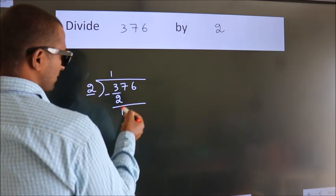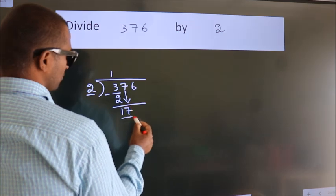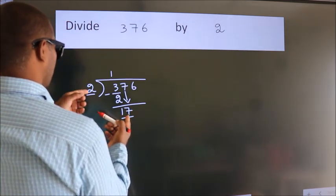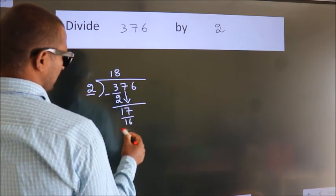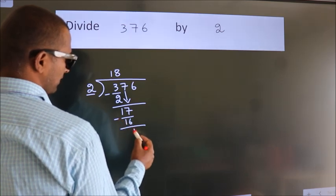After this, bring down the beside number. So 7 down. So 17. A number close to 17 in the 2 table is 2 times 8, which equals 16. Now we subtract. We get 1.